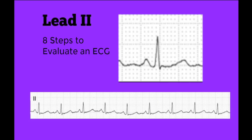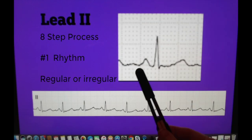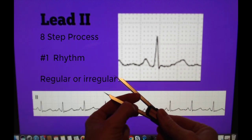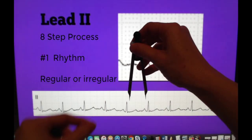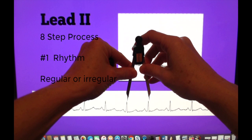Excellent, so we are now ready to go into our eight steps to evaluate an ECG. Step number one: rhythm. We want to know if our rhythm is regular or irregular and to do this we will use a set of calipers and we measure from the R to R wave.